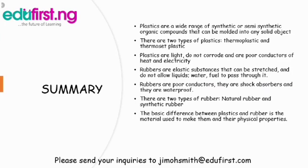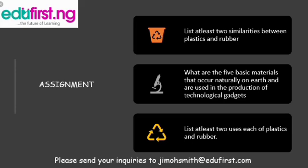In this video we've been able to talk about plastics, the properties of plastics, rubber, the properties of rubber, the types of rubber, and the basic differences between plastic and rubber. Your assignment: first, list at least two similarities between plastic and rubber. Second, list the five basic materials that occur naturally on earth and are used in the production of technological gadgets. Third, list at least two uses each of plastics and rubber.